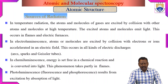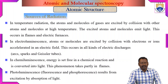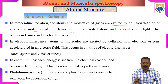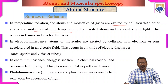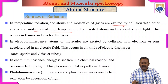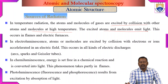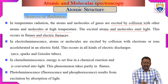Sources of radiation. In an earlier lecture, we discussed the evolution of different stages of atoms. In order to understand the structure of the atom, we must know about the different sources of radiation. In temperature radiation, the atoms and molecules of gases are excited by collision with other atoms and molecules at high temperature. The excited atoms and molecules emit light. This occurs in flames and electric furnaces.